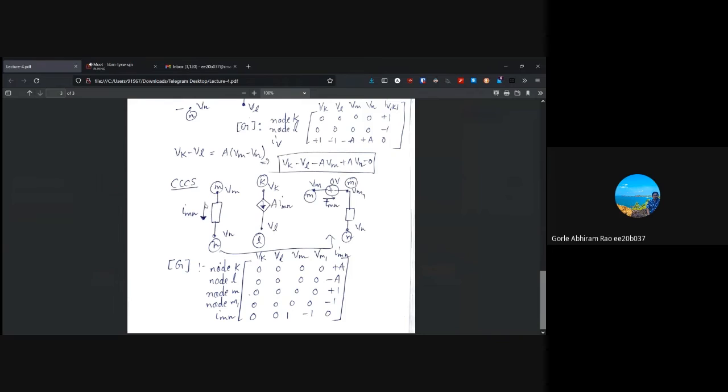And for node m, the current imn is flowing away from the node. So, it will just be plus one. And for this node m1, current is flowing into it. So, the imn coefficient will just be minus one.